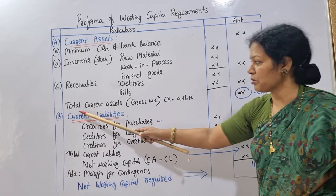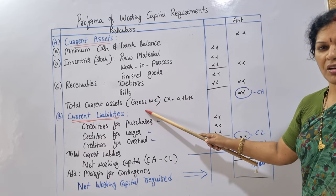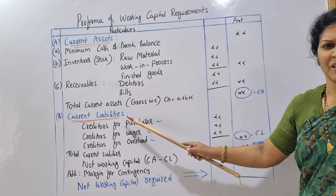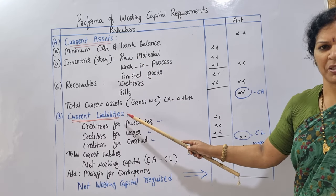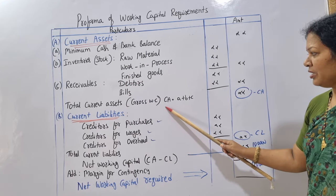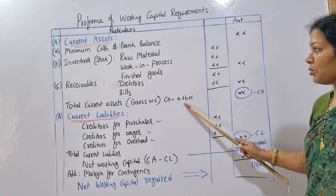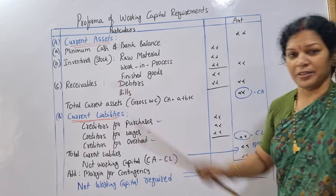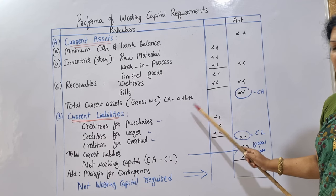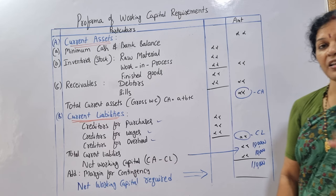The total current assets — A plus B plus C — is the gross working capital. So gross working capital equals total current assets. Current assets (CA) is equal to A plus B plus C. That gives us the current assets total, which is the gross working capital.